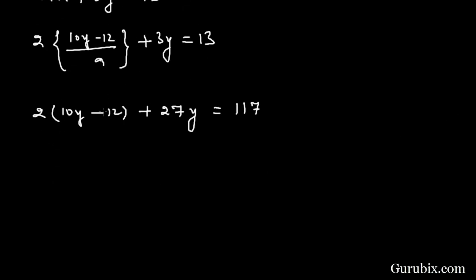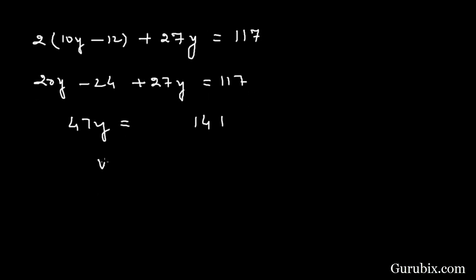And now we shall multiply the values in the bracket with 2. Then we have 20y minus 24 plus 27y equals 117. Here we have 47y equals 141. This means y equals 141 over 47. This means y equals 3.